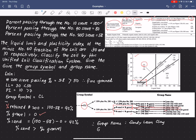And the group symbol again is CL. So this is the final answer for the soil classification using the USCS method.